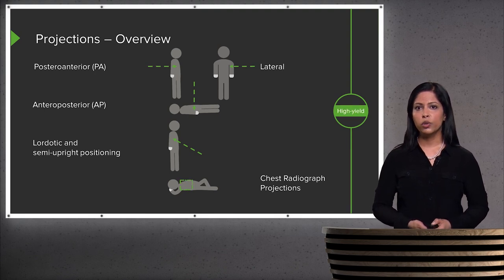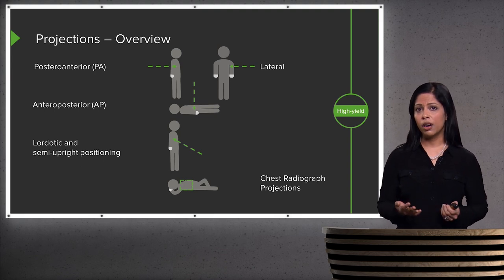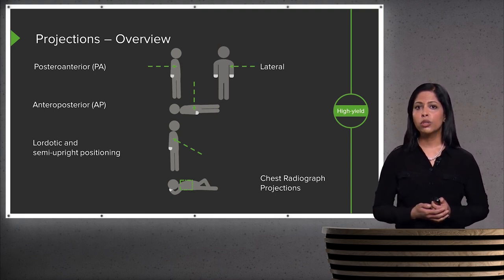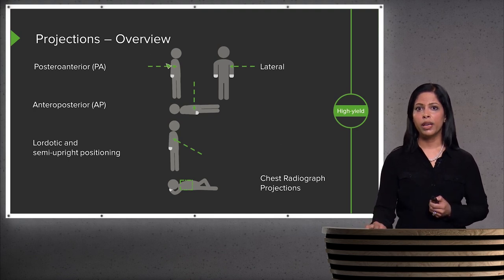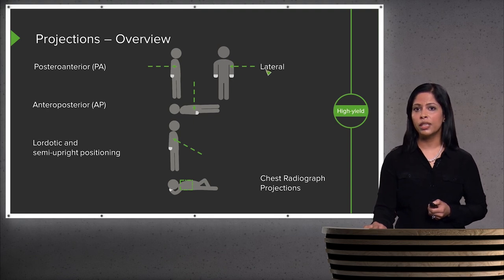This is an overview of the different types of projections that we can use. Each one has its pros and cons and each one can be used in a different situation. The most commonly used is the PA and the lateral — when you have a normal chest x-ray, it consists of these two views. The standard PA and lateral show how the patient stands in relation to the x-ray beam when the image is obtained.